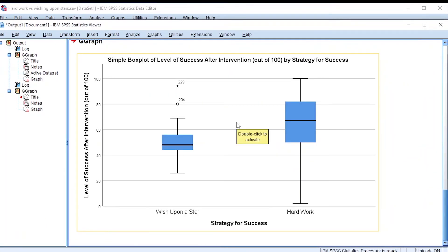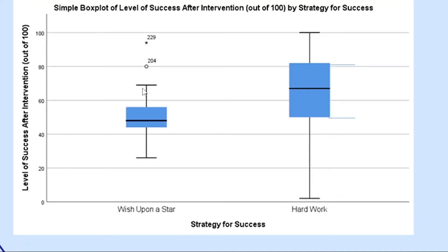I drag and drop the level of success after intervention and click OK. We now have our next set of box plots. You can see something that looks like a star — it's called an asterisk — and we also have a circle. SPSS represents extreme scores as an asterisk in these box plots showing level of success after intervention by strategy of success.